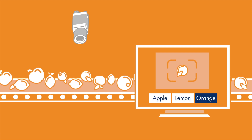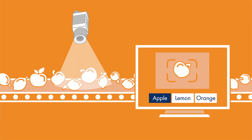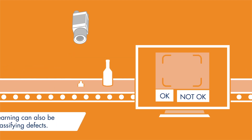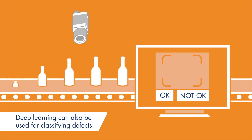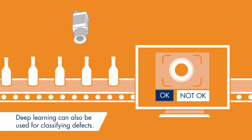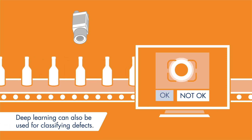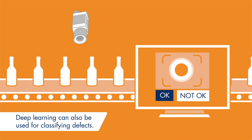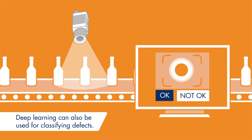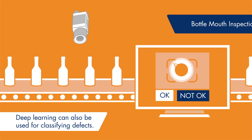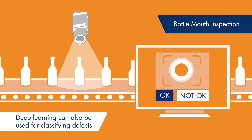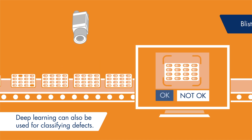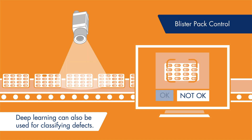Aside from object classification, defect classification also greatly benefits from Halcon's deep learning functionalities — for example, the inspection of bottle mouths for irregularities, or when monitoring if pill blister packs are intact.